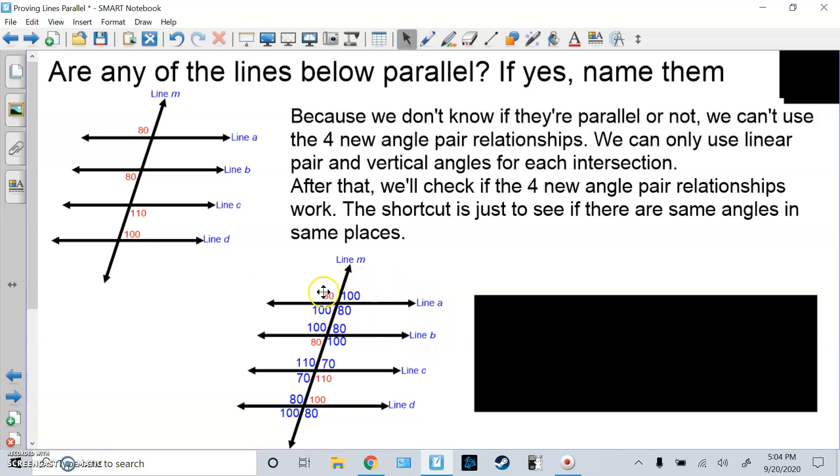How about A and C? Top left number is 80, top left number is 110. Those are not the same. Then A and D, top left number is 80, top left number is 80. So corresponding angles are equal here. Bottom right is 80, bottom right is 80. Corresponding angles are equal here. 100, 100 on top right. 100 on the bottom left, 100 on the bottom left. Corresponding angles are equal.